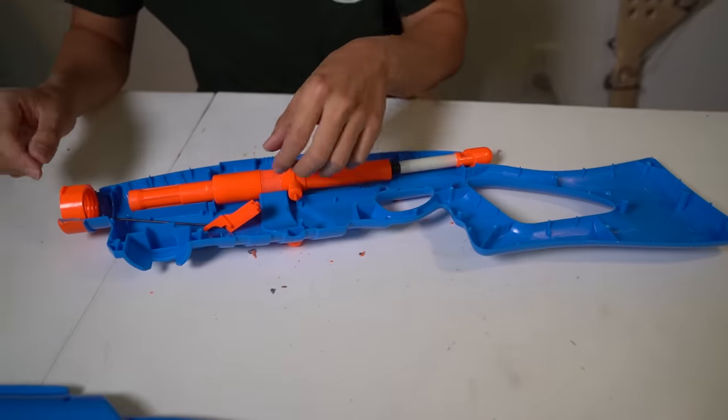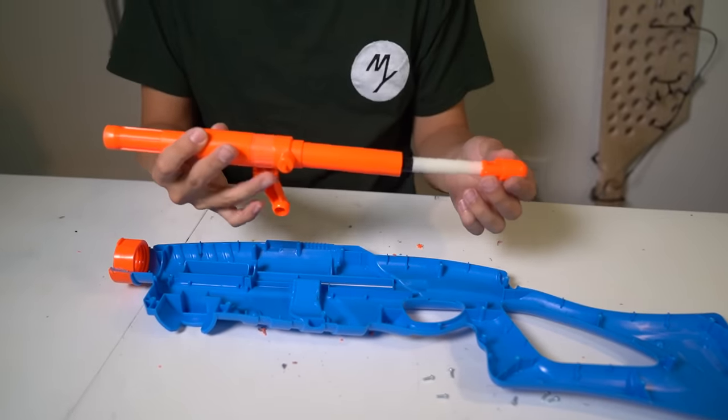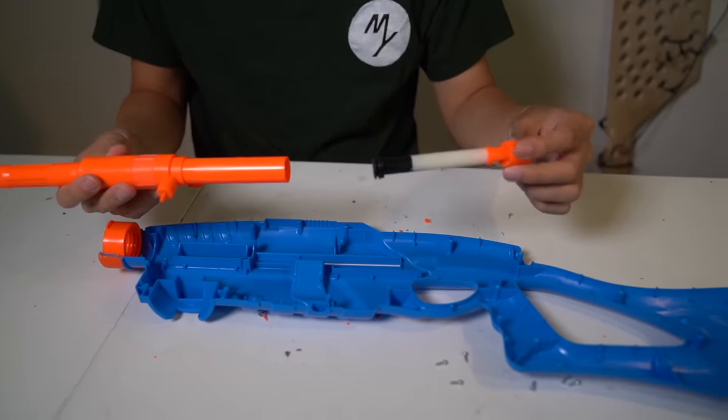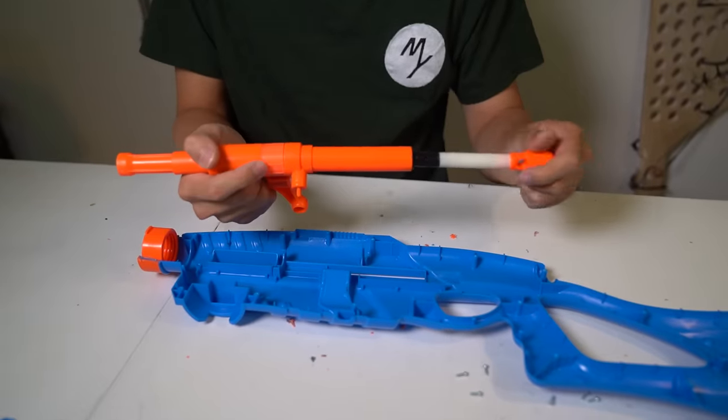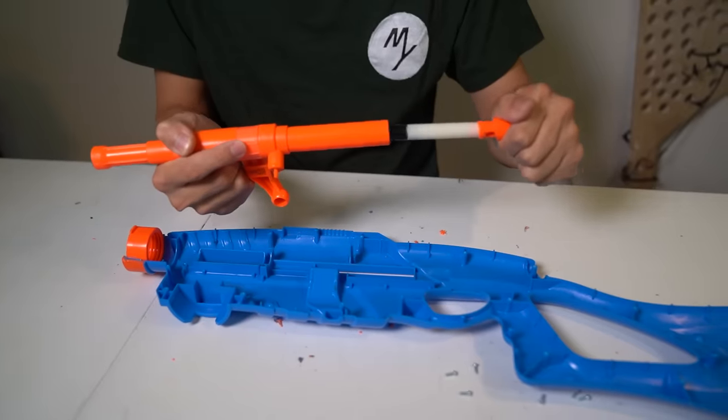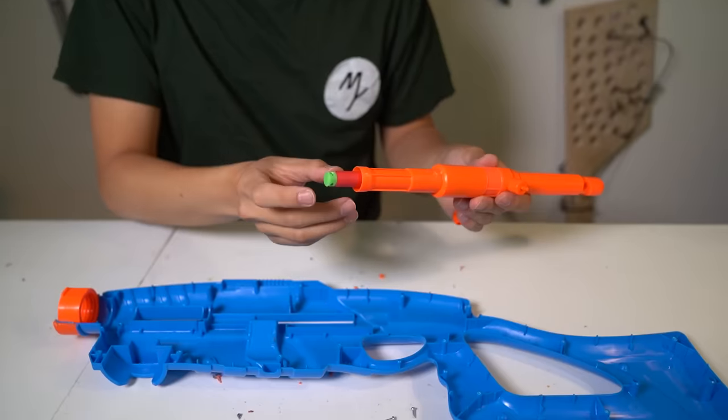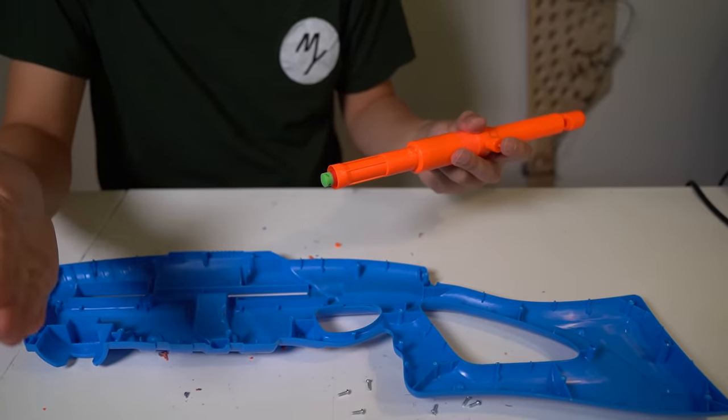Alright, so what do we got going on in here? This is everything all together. In the back there's a pump that looks like this, and what you do is you pressurize it by pumping it up. The dart goes in the front and then when you shoot it with this...